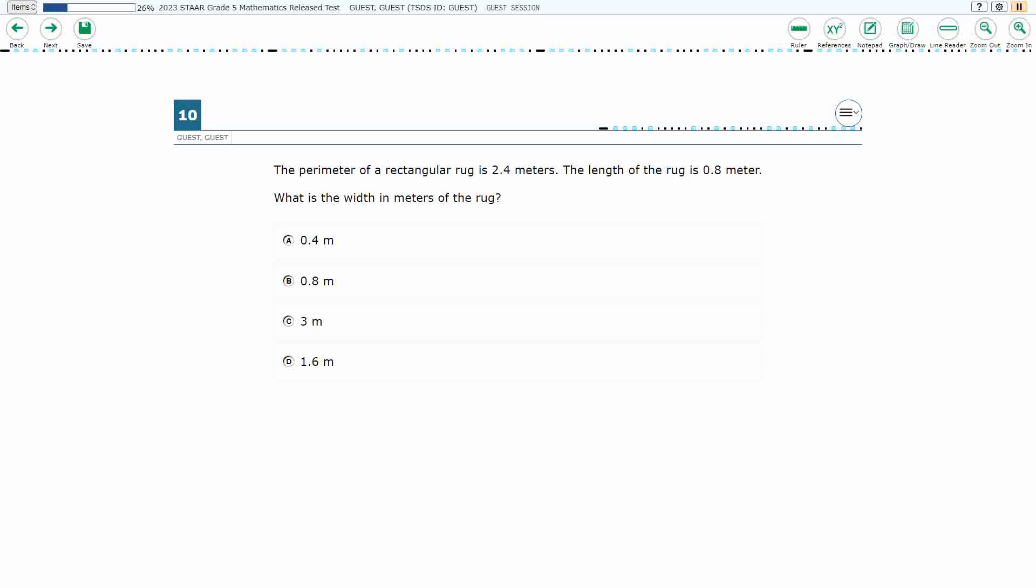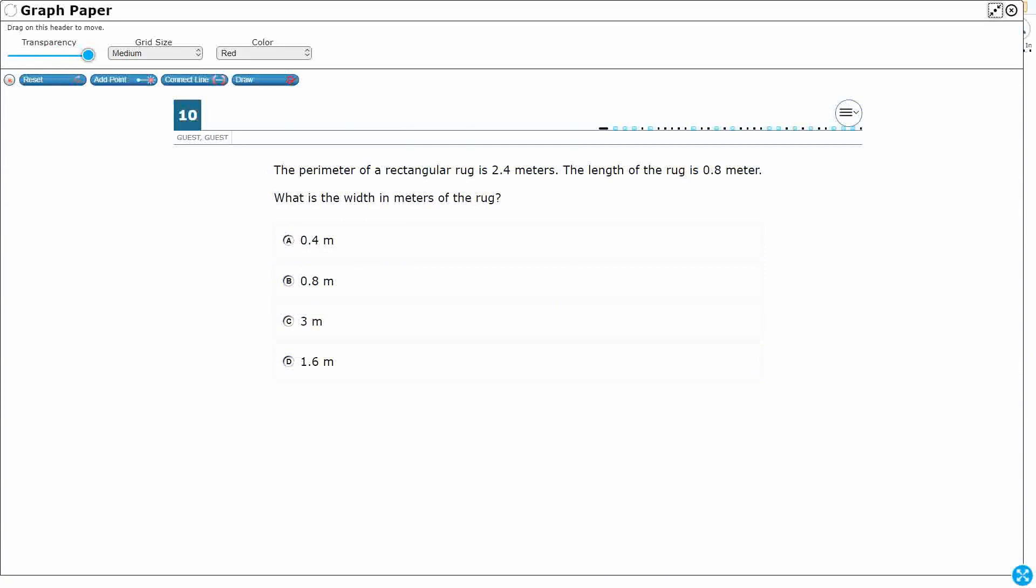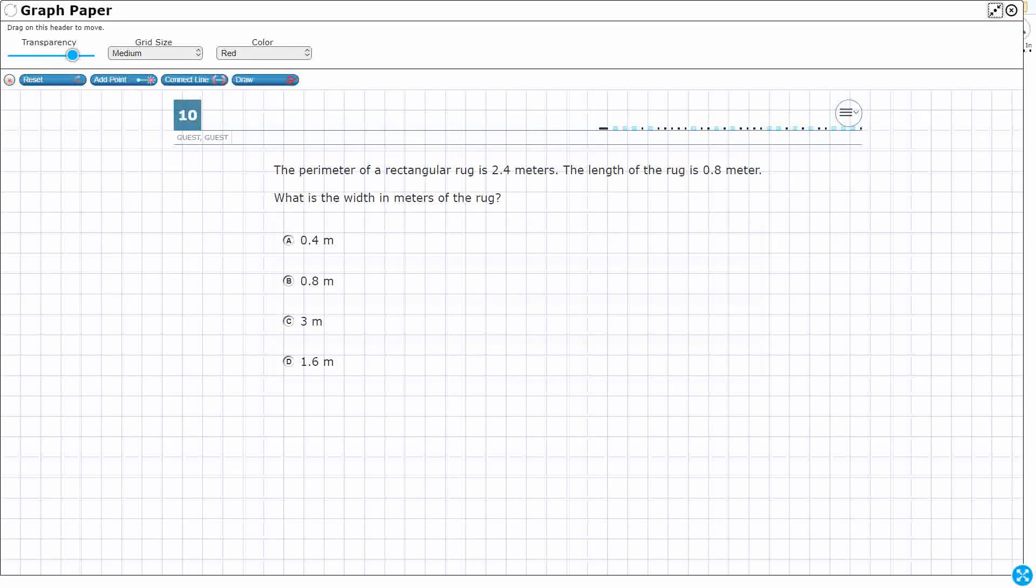All right, so we have the perimeter of a rectangular rug. What are we going to be able to do with this? Well, what we need to do first is probably draw a picture so that we can represent this. Let's see what they give us. Let's use the grid lines here. So rectangular rug, length is 0.8.